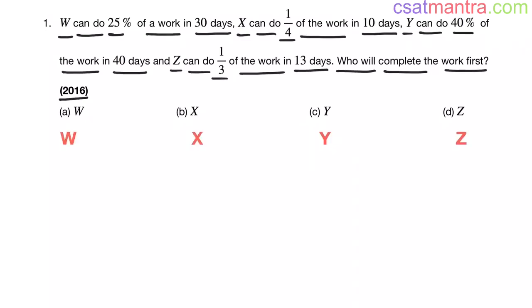W can do 25% of a work in 30 days. So 25% of work in 30 days means 100% of work would be 30 into 4, that is equal to 120 days my friends. See, 25 into 4 is 100, so I have multiplied with 4 on this side also. 30 into 4, that is equal to 120.